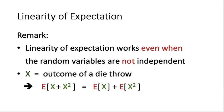An important remark: linearity of expectation works even when the random variables are not independent. For instance, let x be the outcome of a die throw. Then E[x + x²] = E[x] + E[x²]. Clearly x and x² are not independent — knowing x tells you x² immediately — so they are dependent. But even so, linearity of expectation still holds.